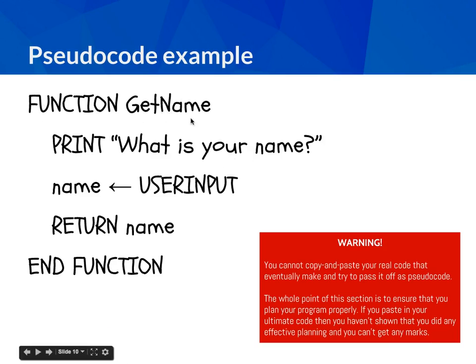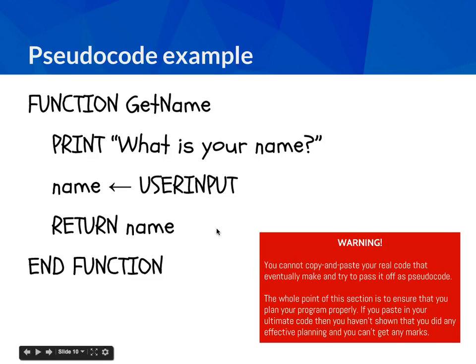Here's an example of pseudocode. This is for a function called getName that gets a player's name. It prints 'what is your name?' to the user, assigns the user's input to a variable called name, returns that to the calling part of the program, and ends the function. A top warning: do not copy and paste real code and try to pass it off as pseudocode. No one will fall for it — real syntax like colons, semicolons, and language-specific keywords make it obvious it's not pseudocode, and that means you've not demonstrated planning.